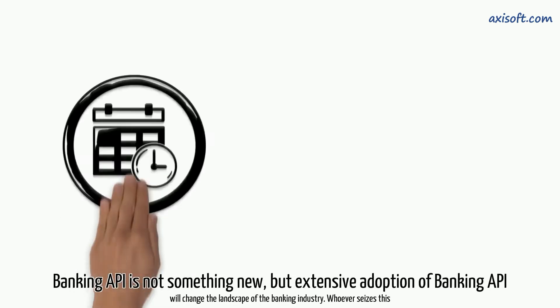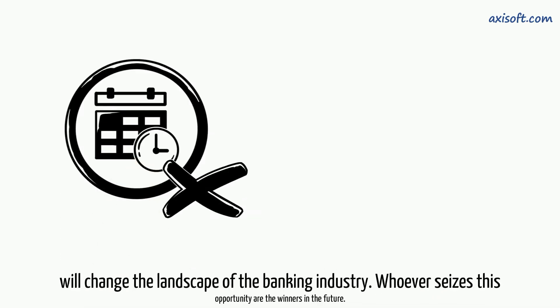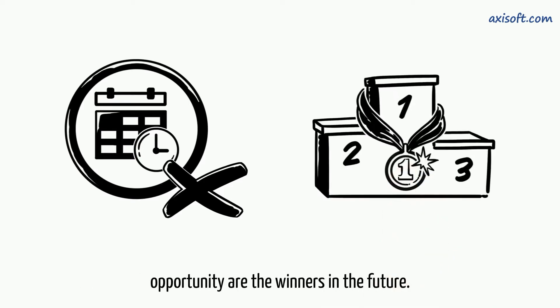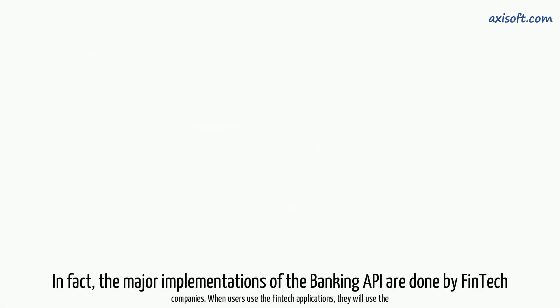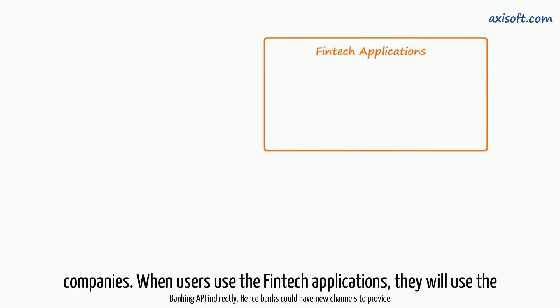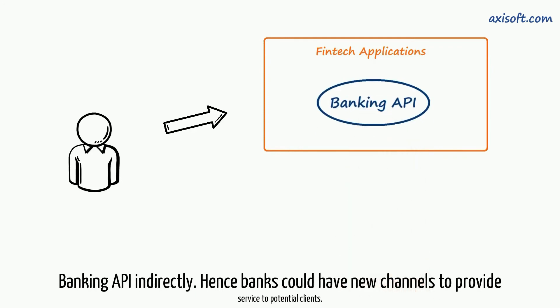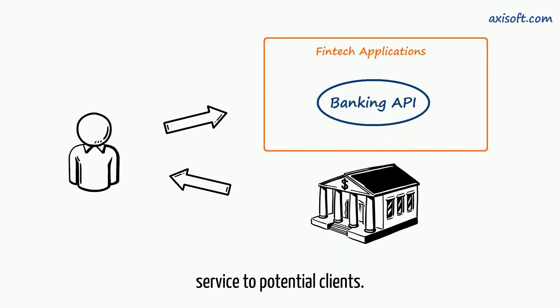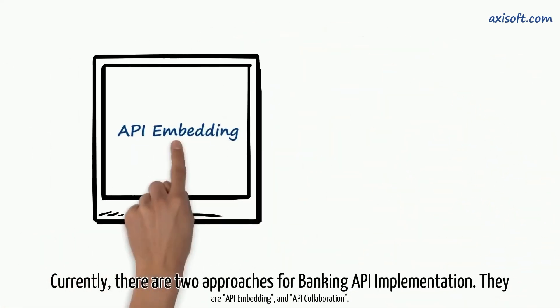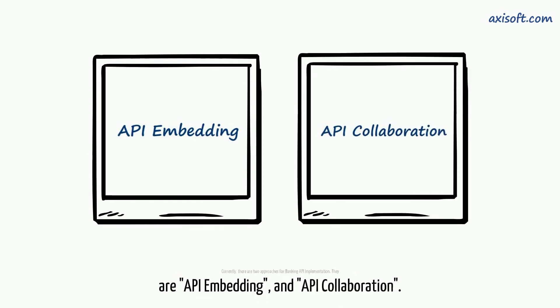Banking API is not something new, but the extensive adoption of banking API will change the landscape of the banking industry — whoever seizes this opportunity will be the winners in the future. In fact, the major implementations of banking API are done by fintech companies. When users use fintech applications, they use the banking API indirectly, giving banks new channels to provide service to potential clients. Currently there are two approaches for banking API implementation: API embedding and API collaboration.